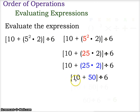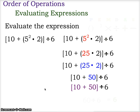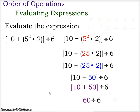We do the bracket grouping symbol next — 10 plus 50 gives us 60. And 60 divided by 6 gives us a final answer of 6.